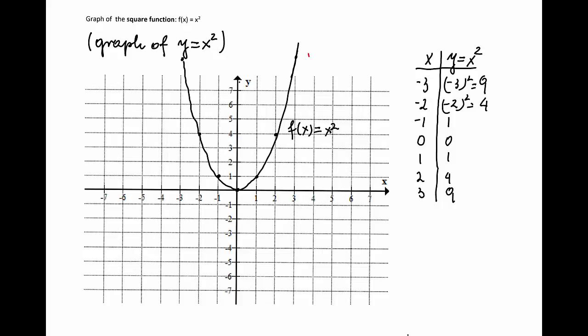The graph of that function is called the parabola. The graph is symmetric with respect to the y-axis. And the point 0, 0 for the parabola is called the vertex.